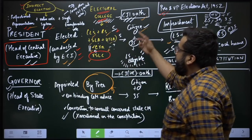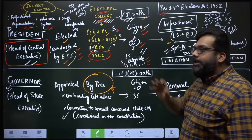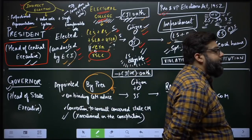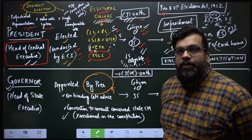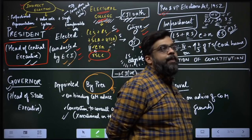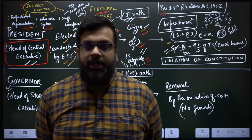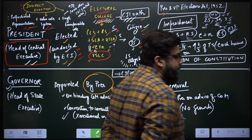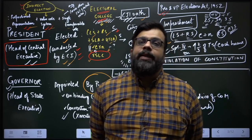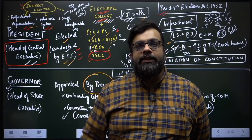A presidential candidate must be a citizen of India, at least 35 years of age, and eligible to contest a Lok Sabha election. In India, citizenship does not discriminate based on how it was acquired — whether by birth, descent, naturalization, or registration — all are equally Indian citizens.